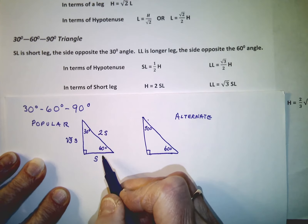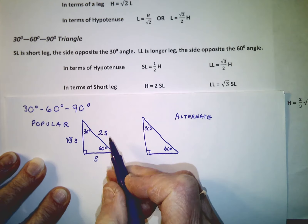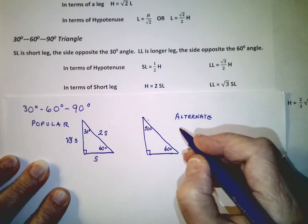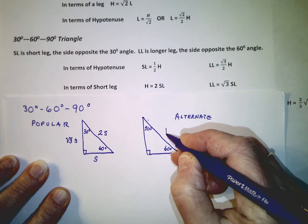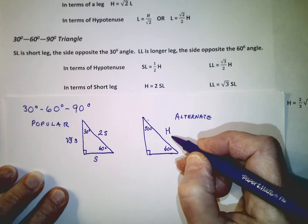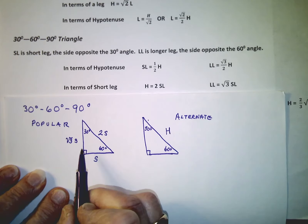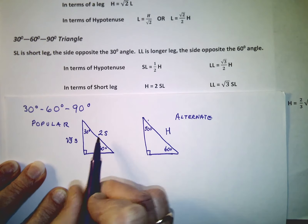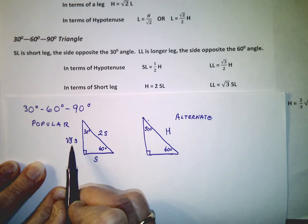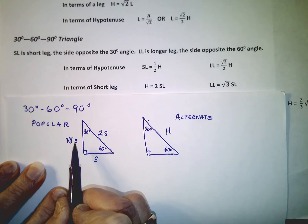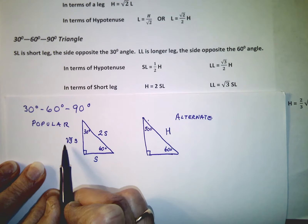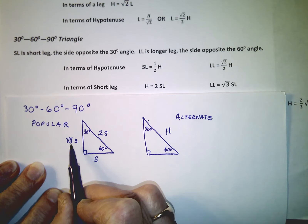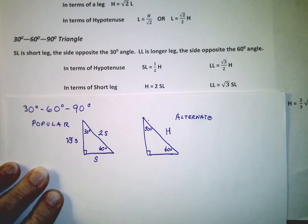Alternatively, it can be defined in terms of the hypotenuse, which is how it appears in many trig formulas. The easy way to remember the popular picture is: a 1 side, a 2 side, and a square root of 3 side. Be careful — the square root of 3 doesn't go on the hypotenuse. The square root of 3 is about 1.7, and the hypotenuse is 2, which is bigger. It's still a 1, 2, square root of 3 side — not a bad way to remember it.